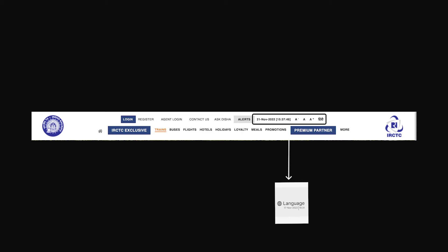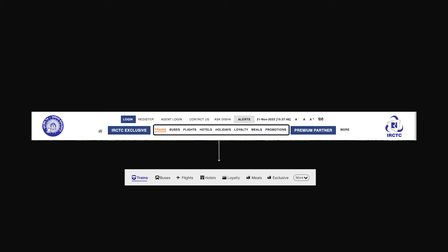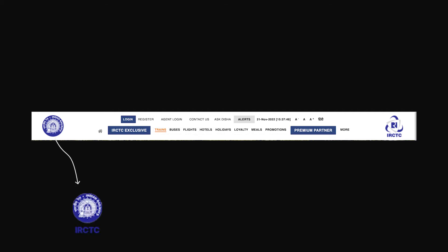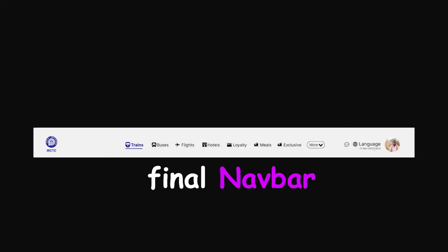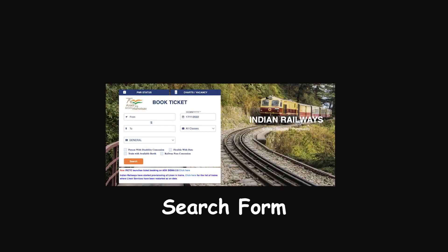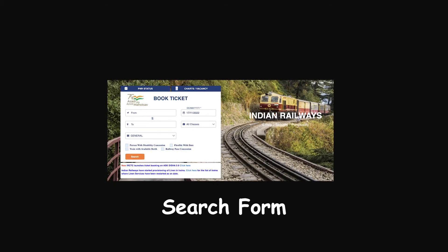There are different links for trains, buses, and other external links — let's align them in the center with some logos. Two logos makes no sense, so putting one logo with the name of the brand and the theme color. The navbar looks decent now.